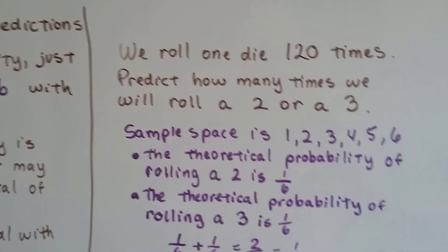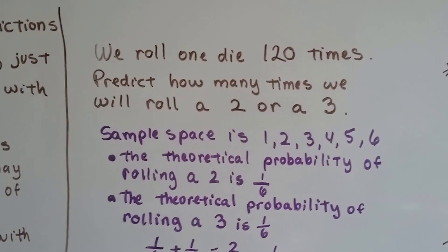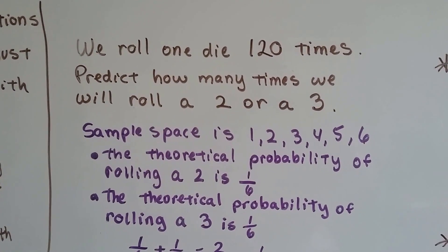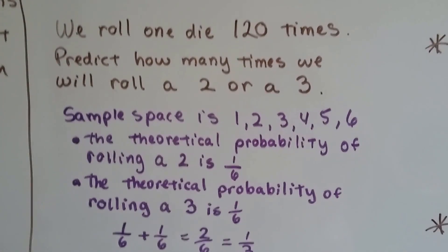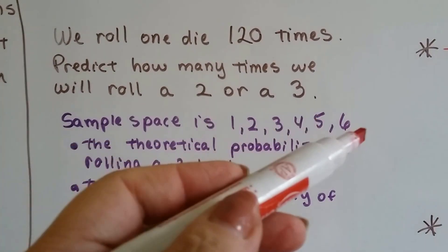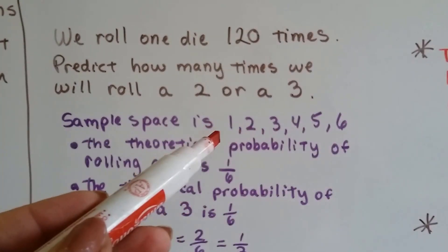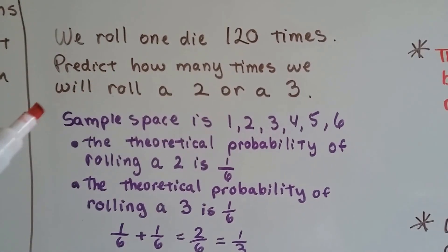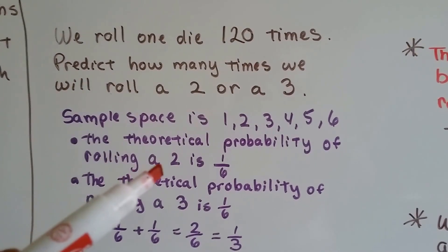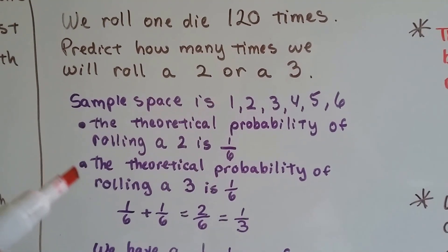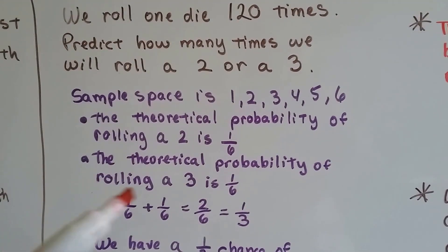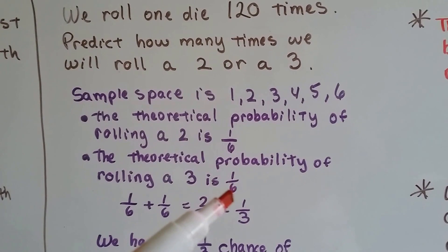So if we roll one die 120 times and predict how many times we will roll a 2 or a 3, our sample space is 1, 2, 3, 4, 5, 6, because those are the possible outcomes of rolling one die. The theoretical probability of rolling a 2 is 1 sixth. It's 1 out of 6 chances. And the theoretical probability of rolling a 3 is 1 out of 6 chances.